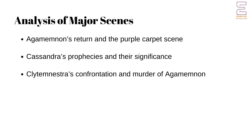Analysis of Major Scenes. Several scenes in Agamemnon stand out for their dramatic and thematic significance. Agamemnon's Return and the Purple Carpet Scene: Agamemnon's act of walking on the purple carpet symbolizes his hubris and sets the stage for his downfall. Cassandra's Prophecies: her foretellings add a layer of inevitability and tragedy, highlighting the curse on Agamemnon's family. Clytemnestra's Confrontation and Murder of Agamemnon: this scene is the climax of the play where themes of revenge and justice converge.